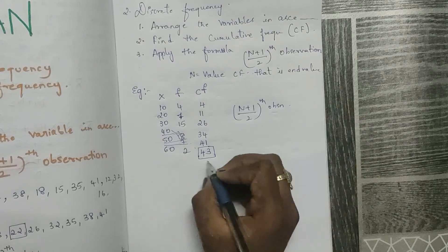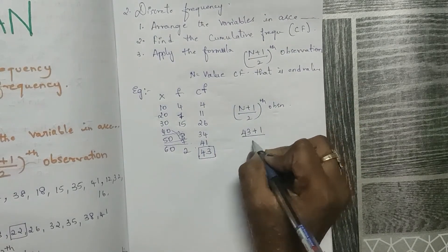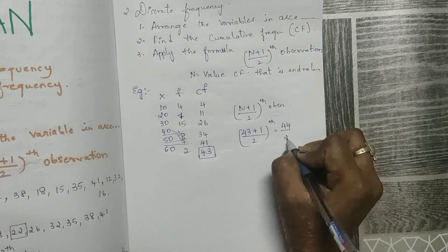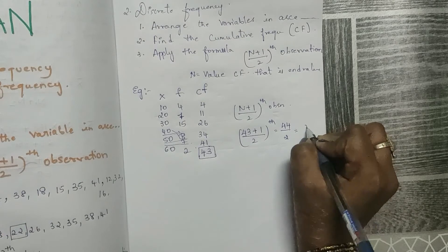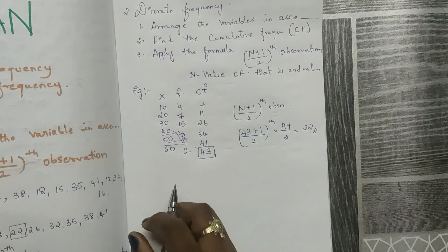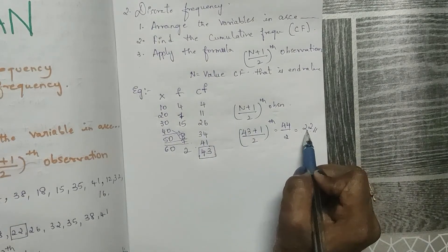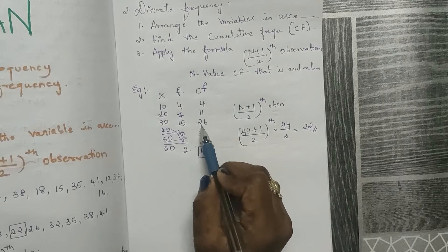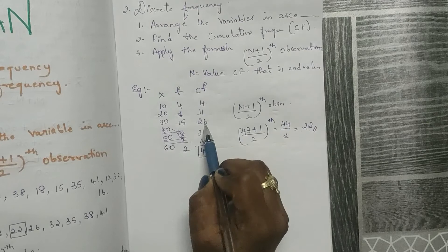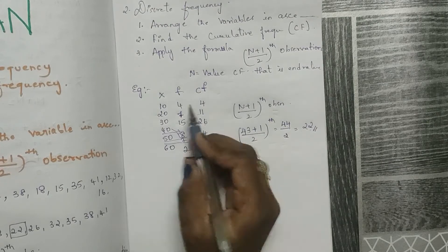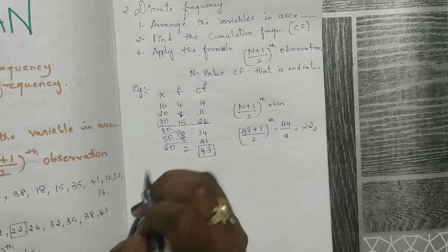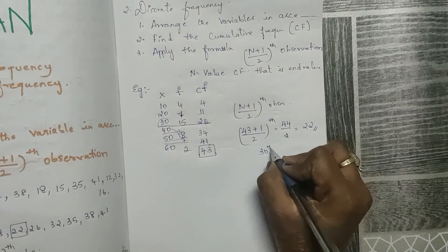Now apply (n+1)/2: 43+1 divided by 2 equals 44/2, which is 22. Search for 22 in the cumulative frequency. Since CF goes up to 11 in the previous row and 26 in this row, 22 falls in this row. The corresponding X value, 30, is your median observation.